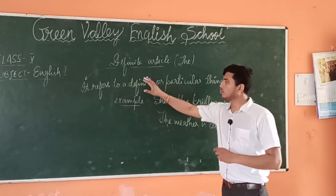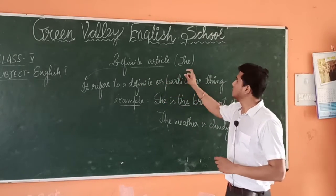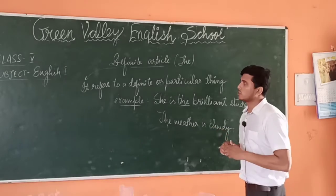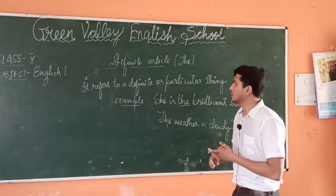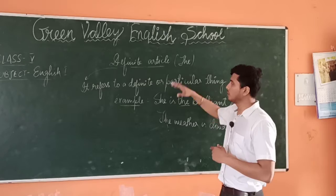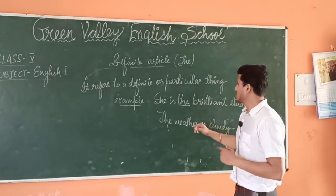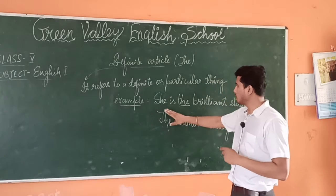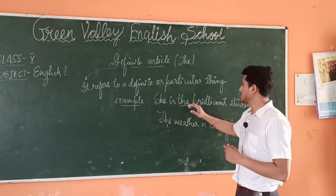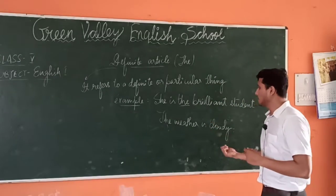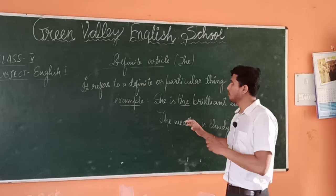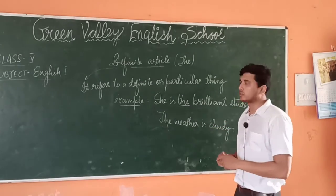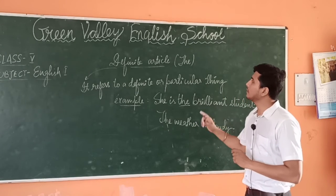Now let us understand what the definite article is. The word that comes under it is 'the', and it refers to a definite or a particular thing. Whenever we find a particular or definite thing, person, animal, place, or thing, we are going to use 'the'. For example, 'She is the brilliant student' — we are certain about the person we are talking about. Another example: 'The weather is cloudy' — we are sure about the weather, that we are talking about the weather only, so we say 'the weather is cloudy.' This is what the definite article is.